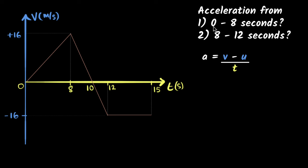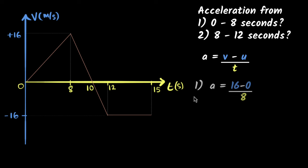For the first one, calculating from zero to eight seconds: your initial velocity is zero (you can see it from the graph), and your final velocity at eight seconds is 16. So acceleration = (16 − 0) ÷ 8 = 16 ÷ 8 = 2 meters per second squared. So you can calculate acceleration directly from the velocity-time graph.